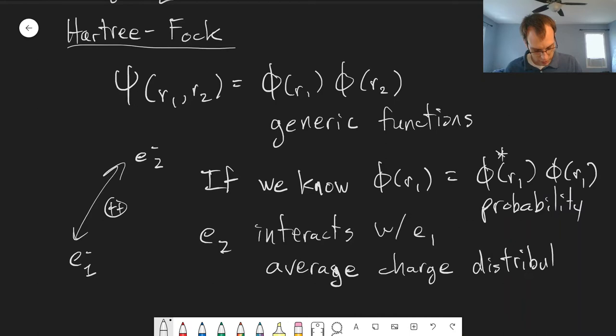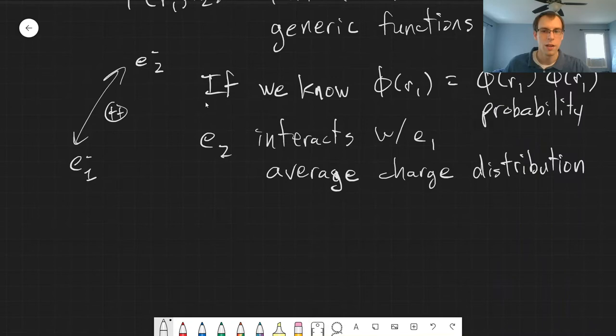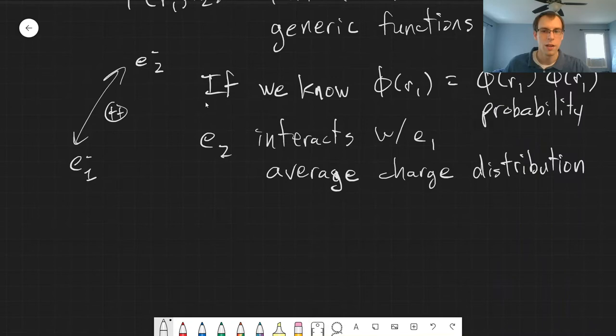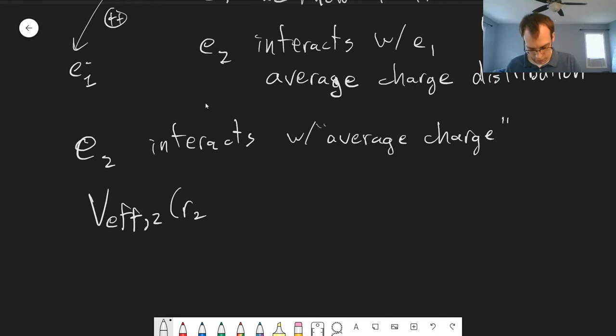And so that gives us a way to find what's the potential energy. That's the big term that gives us trouble, is that the potential energy is not something we can put into an exactly solvable state. So what we can say is that electron two interacts with an average charge, or really like an average charge distribution. We know the distribution of where electron one will be, and electron two is interacting with that. And so we can say that the effective potential energy for electron two, which is a function of R2, is going to be basically the expectation value of this interaction with electron one.